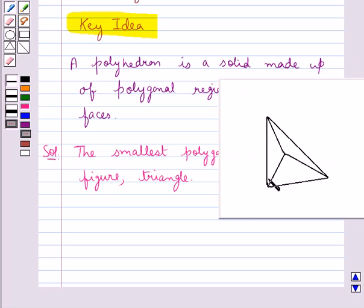This figure is a polyhedron as its faces are the polygonal regions. Now in this figure there are three faces and these are triangles, and the fourth face is the base, and that is also a triangle.